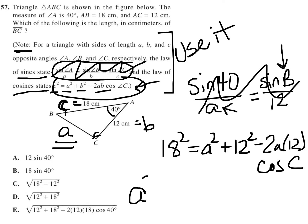Then I basically just reshuffle the rest of my letters. So instead of a² plus b², I'd have b² plus c². So I'd have 12² plus 18² minus 2 times 12 times 18, because that's what b and c are, times the cosine of angle A.